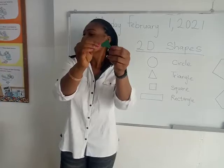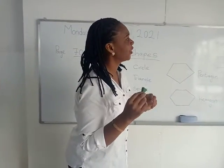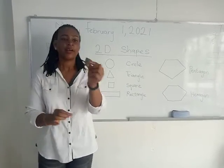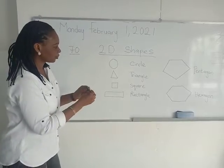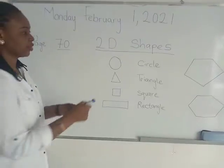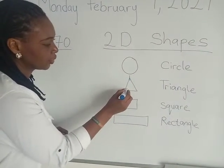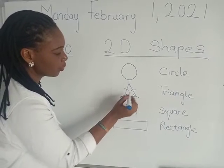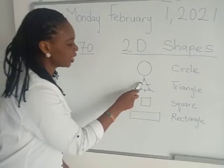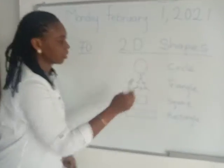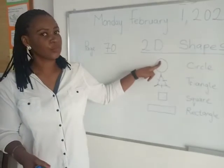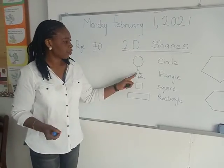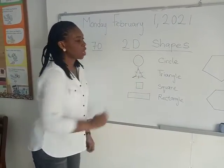We move to the next shape, which is the triangle. Look around at home and find objects that have the shape of a triangle. Now, how many sides does a triangle have? A triangle has one, two, three corners and one, two, three sides. Circles don't have any sides or corners because they're just rounded objects.